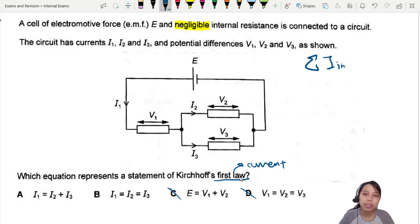states that the sum of current, total current into a junction, is the sum you add together of the current out of a junction. Makes sense, right? Two cars go into a junction, two cars must come out of the junction. You can't just have something missing or disappearing. So the junction